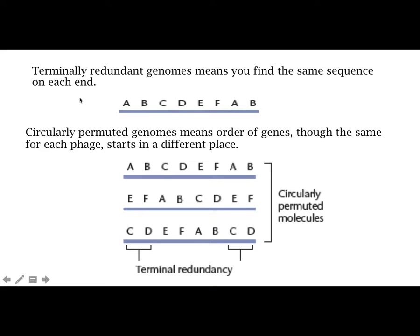So just some explanation. Terminally redundant genomes mean you have the same sequence on each end. If we look at this as a linear chromosome that might be in the phage head, it starts off A, B, C, D, E, F — but then the genes represented by A and B are repeated on the other end. So we have the same sequence on both ends.